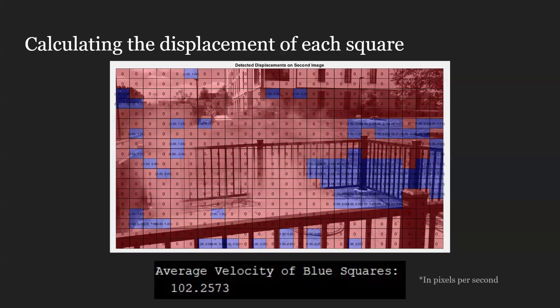We take that displacement and the image size of the little square and the time difference between the first and second image, and it gives us a velocity value for that square.